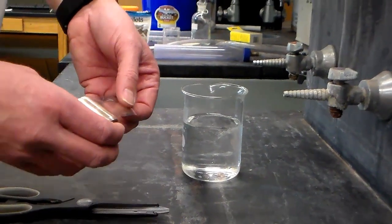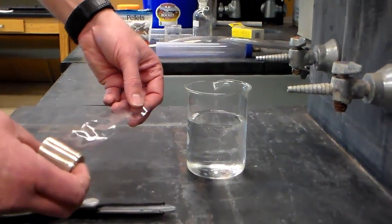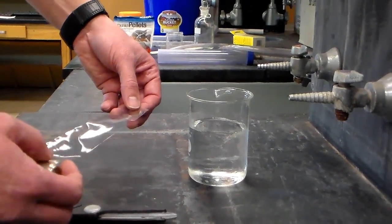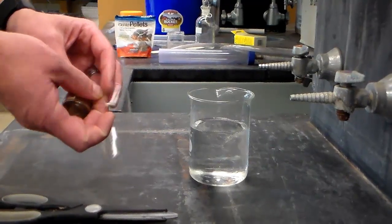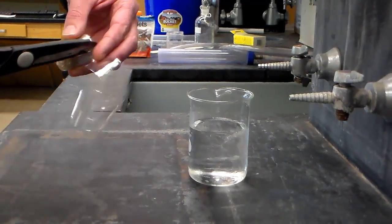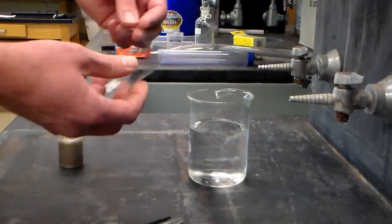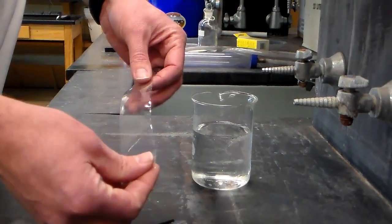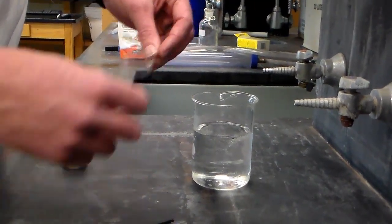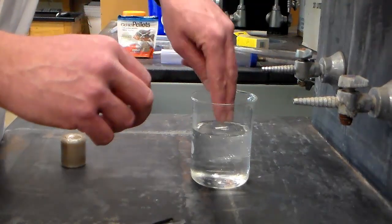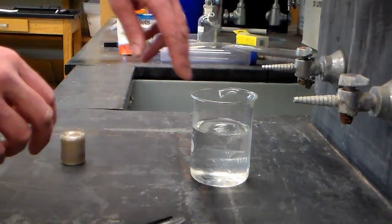Okay, so this is dialysis tubing. We want to pull off 20 centimeters or so and cut it. Now when it's dry it's not very useful, so then put it in distilled water and let it soak for about five minutes.